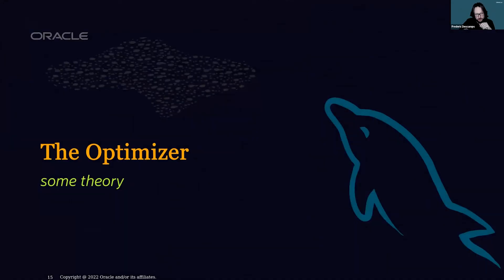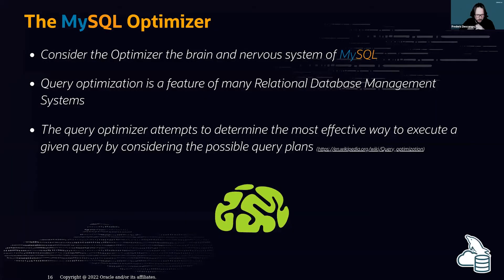One of the most important components of MySQL when talking about queries is the optimizer. The MySQL optimizer is considered the brain and nervous system of MySQL — every time we do a query, this is the component that decides what to do.